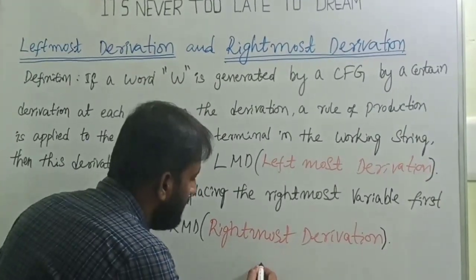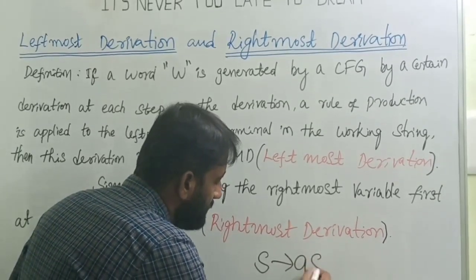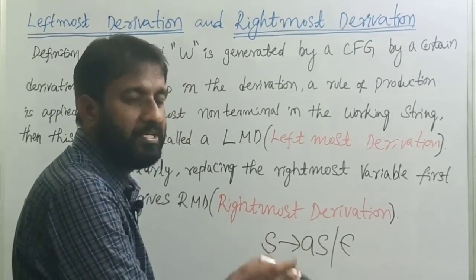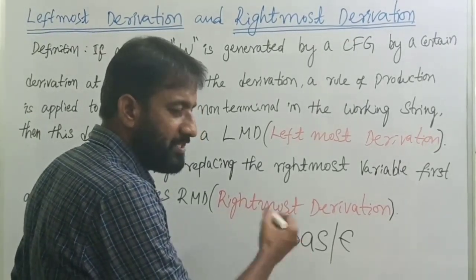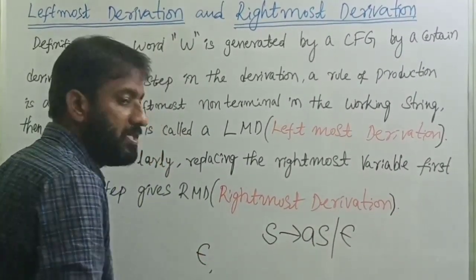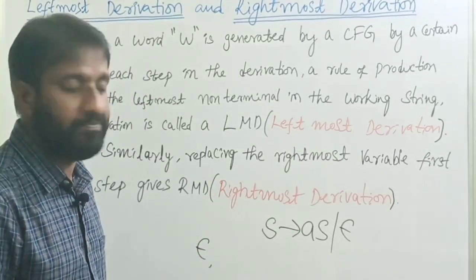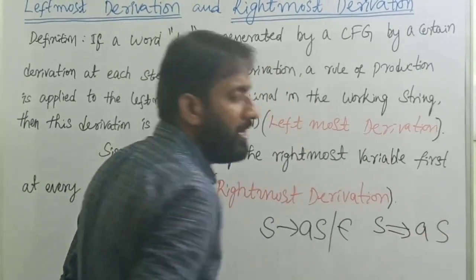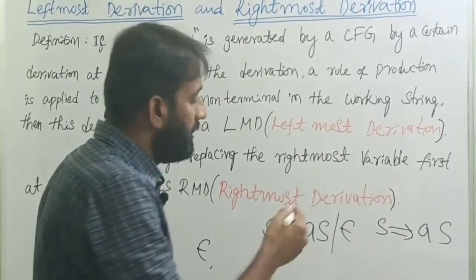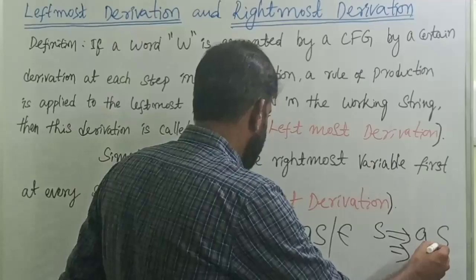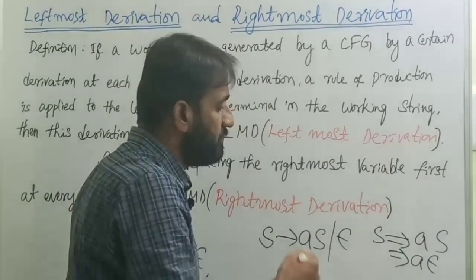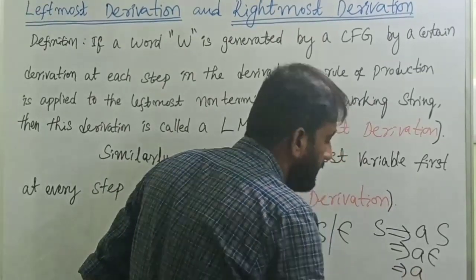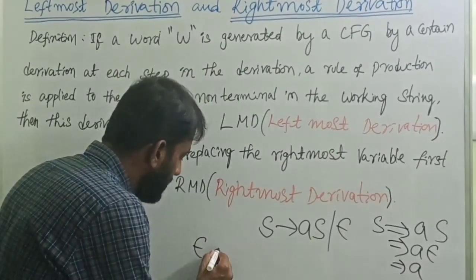For example, take any context-free grammar. Let's say: S tends to aS or epsilon. From this context-free grammar you can generate some strings. The first possible string is epsilon. Then you can generate 'a': S tends to aS, and now S can be replaced with epsilon, so a concatenated with epsilon gives us the derived string 'a'.